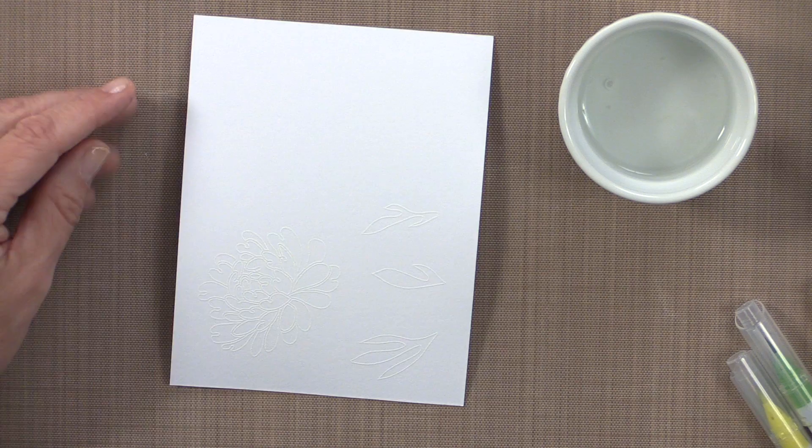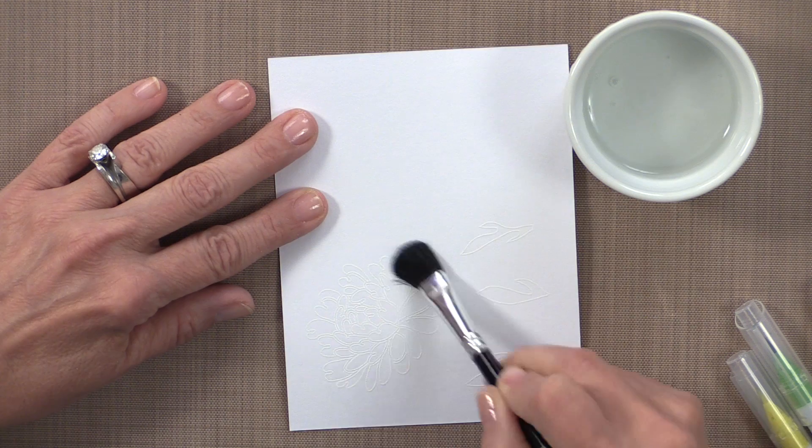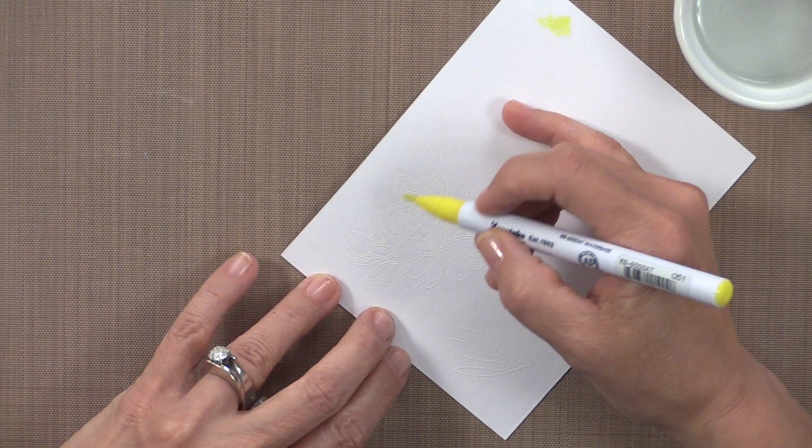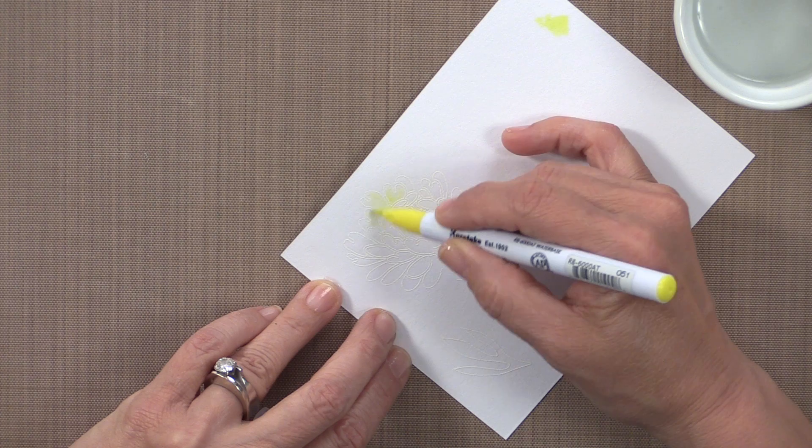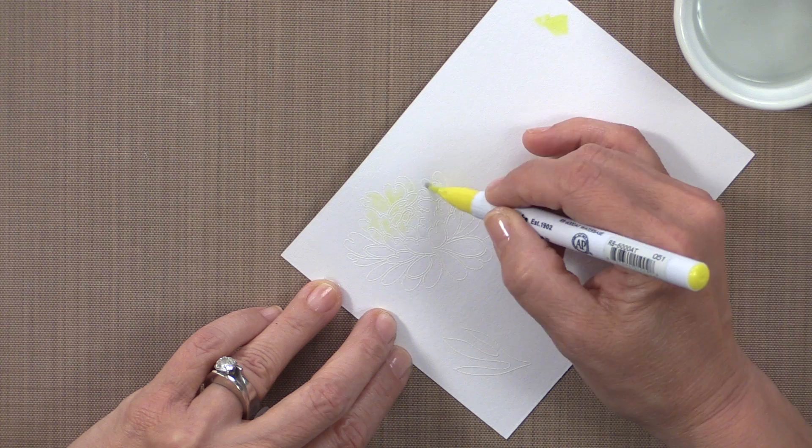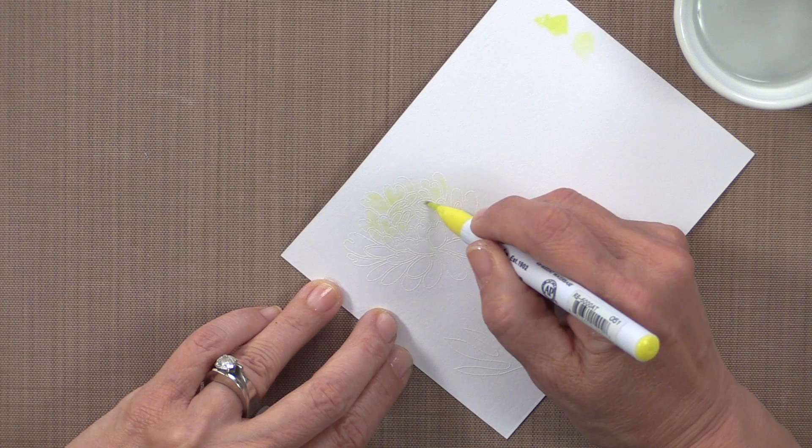So my first step is going to be to dip that paintbrush into the water, and I'm going to just lay water down all over that flower. That just gives me a little bit of water for that color to ride on. And then I always like to test the color on some part of the paper to make sure that the paint is flowing nicely. So now I'm just coloring in all of the petals on this flower in the lemon yellow. And I'm not going to worry too much about it being perfect, I just want to get some color down on each petal.